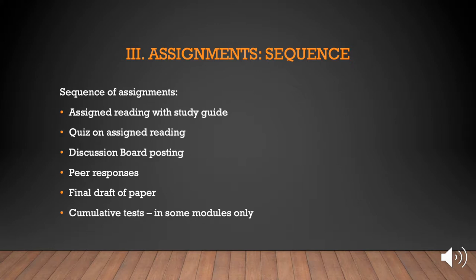The sequence of assignments is this. First, you'll have one or more assigned readings with a study guide for each one. As you work through the assigned reading, answer the items on the study guide. Then you'll have a quiz on the assigned reading. As you take the quiz, refer to your study guide and make a note of any items you miss. After completing the quiz, look up the correct answers in the reading assignment. Then you'll have a discussion board posting, which will contain either your response to a reading or an early draft of a paper. Use what you have learned in the readings, quizzes, and assignment instructions in order to compose your discussion board assignment.